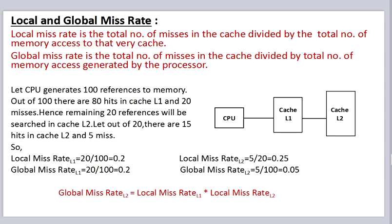Here is one formula for global miss rate for the second level cache. Global miss rate for L2 cache equals local miss rate of L1 cache multiplied by local miss rate of L2 cache.